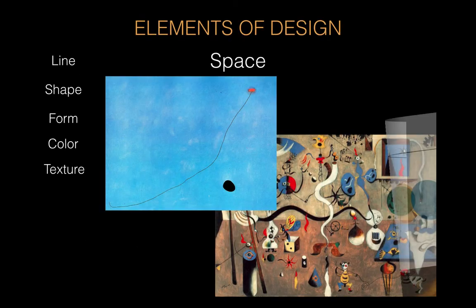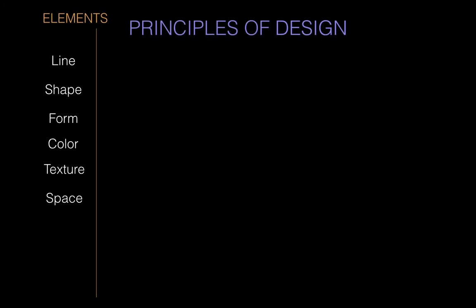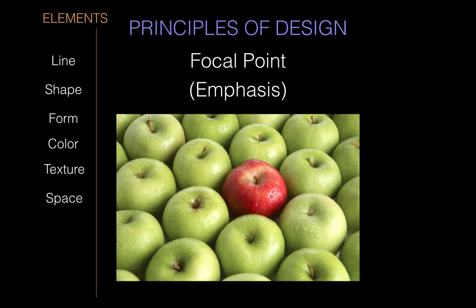Now we come to principles of design. We've got all the basic building blocks — the elements: line, shape, form, color, texture, and space. Now if we start mixing and matching them and using them to good effect, we can actually get principles of design — effects that you can create. The first effect you can create is a focal point, sometimes referred to as emphasis. A focal point is simply where your eye is attracted to first. All strong compositions have a clearly defined focal point — in this case, the red apple. You can use line, shape, form, color, texture, and space to help distinguish what that focal point is and draw your eye to it.